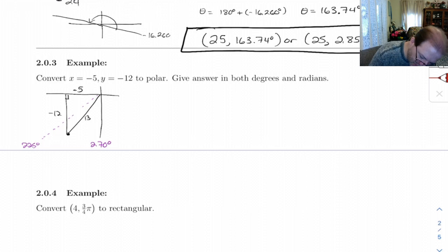So let's see. Well, we already came up with R. R is 13, and so tan theta is 12 over 5.